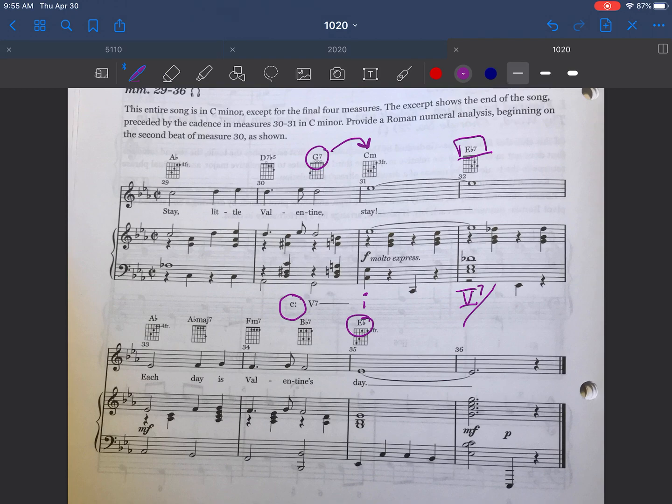So what is it the dominant of? E flat is scale degree 5 of what? That's my question. And the answer to that is A flat. The next question is A flat is what scale degree in C? The answer to that is scale degree 6. And that is the Roman numeral that goes underneath the slash.